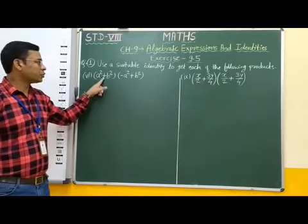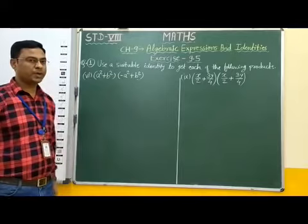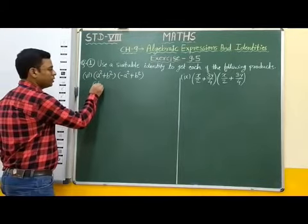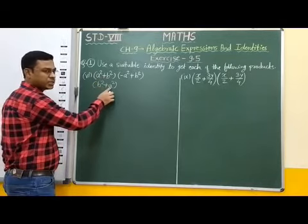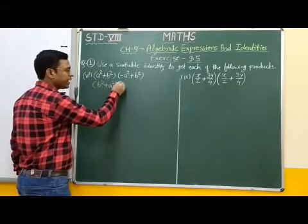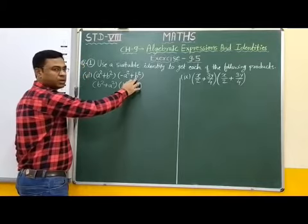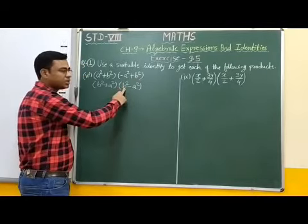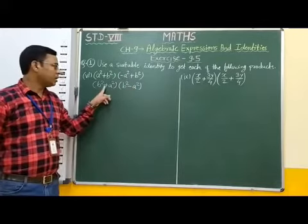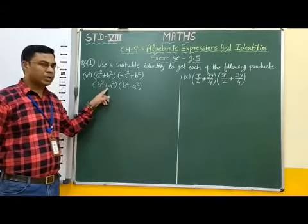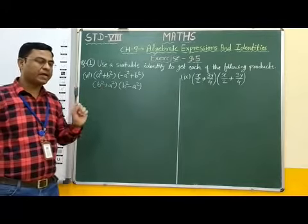Here we have a square plus b square in the first bracket and minus a square plus b square in the second bracket. We can write the second bracket as b square minus a square, since a square plus b square and b square plus a square are equal. Here in the first bracket we have addition of two terms and in the second bracket subtraction of the same terms. Therefore, we can apply the third identity.